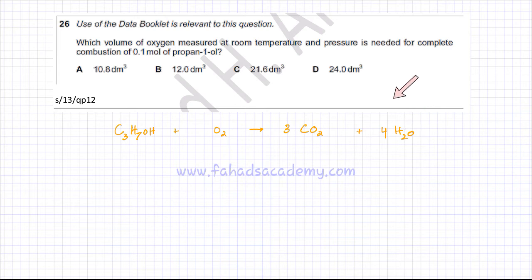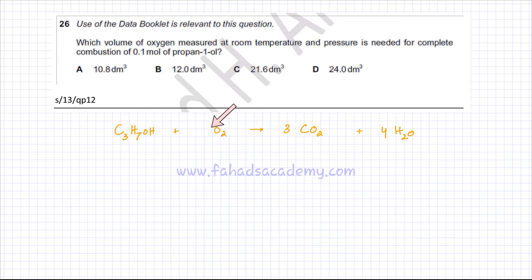That's a total of 10 oxygen atoms. There is one oxygen atom already in propane-1-ol, so you need nine oxygen atoms from O2. To balance that, the coefficient for O2 should be nine over two, or 4.5 O2.